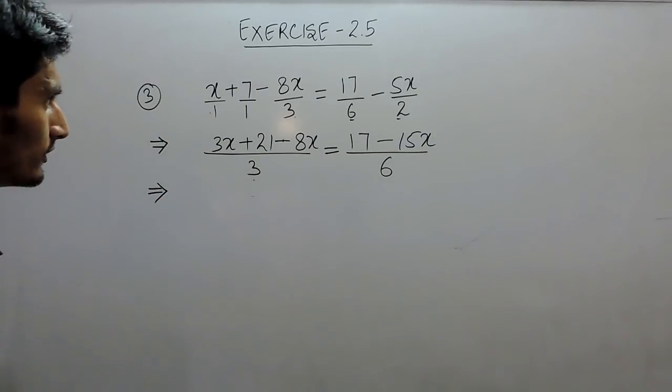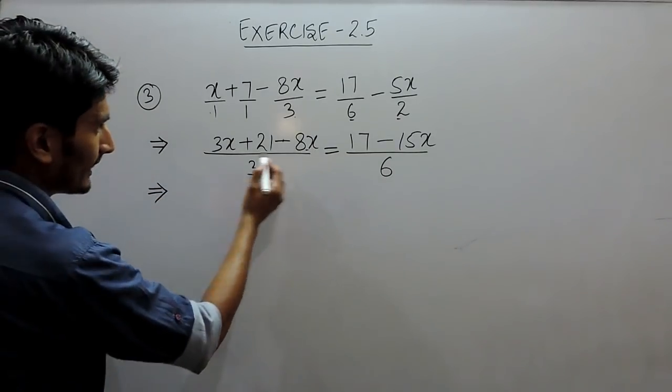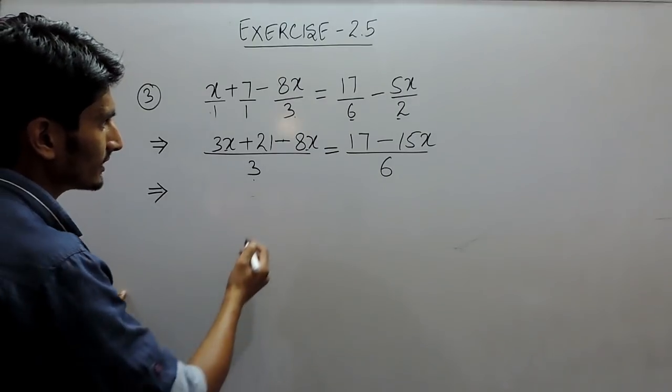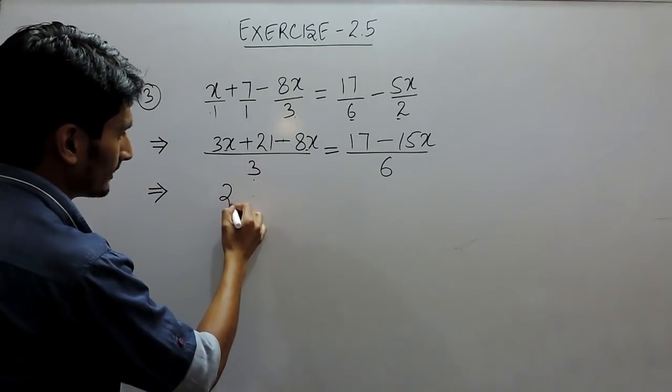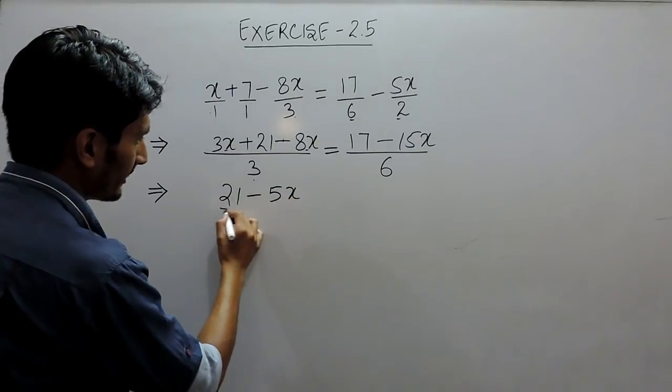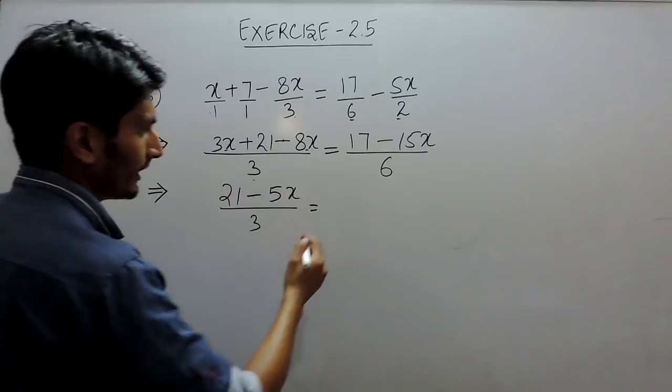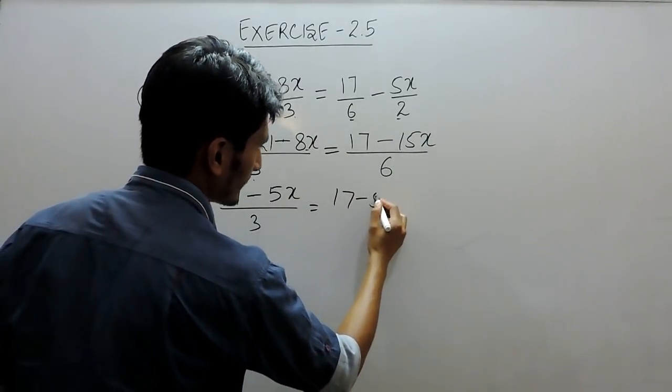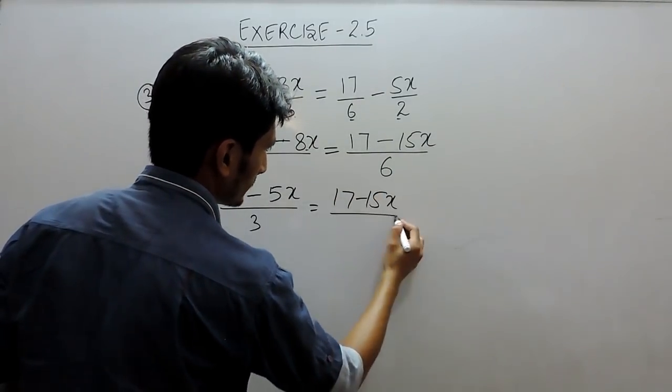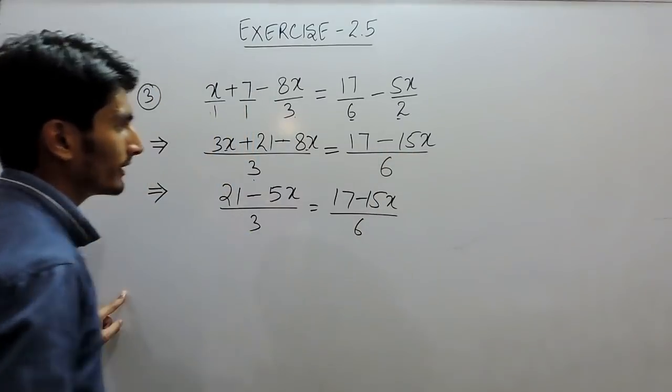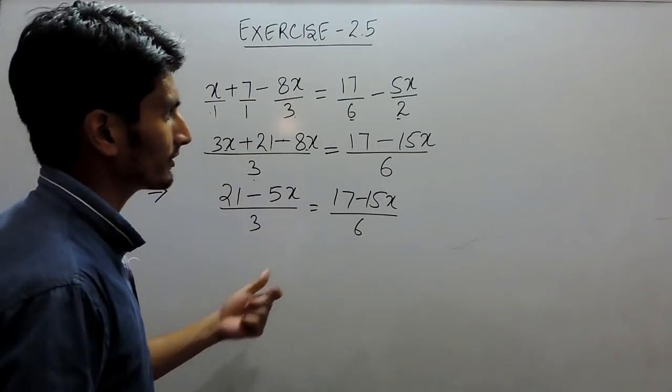Again, we can solve this. Here it is 8x and here it is 3x. We can solve this, and it will come out to be minus 5x upon 3. Because 8 minus 3 is 5, and 21 will remain as it is. Because here, there is no common term which is a variable or which is a constant.